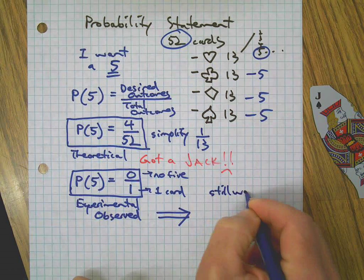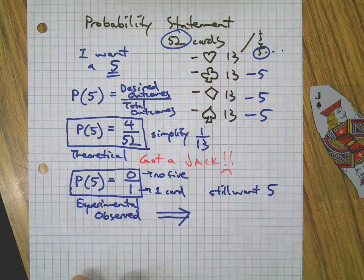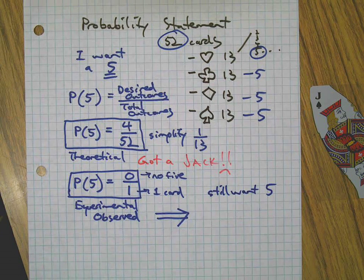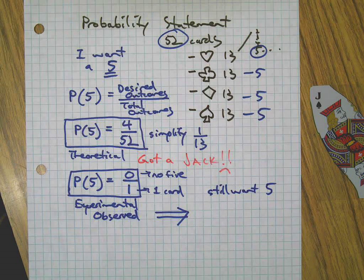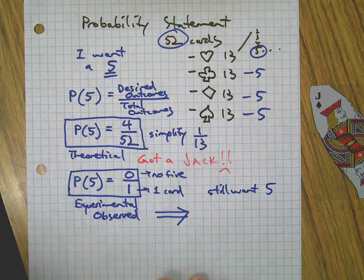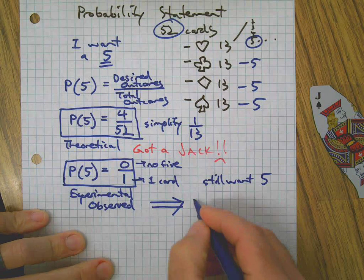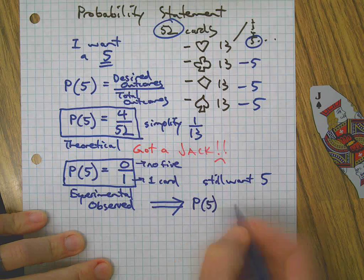Let's say I still want a 5, and I'm going to write a probability statement. That's the point of this lesson, by the way—writing the statement. We're not going to do anything else.